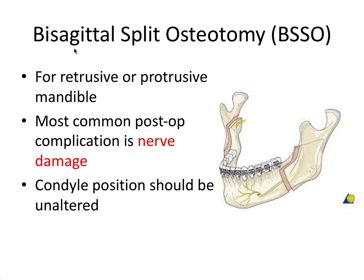A BSSO — bilateral sagittal split osteotomy — is used for retrusive or protrusive mandibles, allowing the surgeon to either set back or bring forward the mandible. Cuts are made on either side of the mandible above the inferior alveolar nerve and down the side of the ramus. The most common post-op complication is nerve damage due to proximity of the inferior alveolar nerve, so neurosensory disturbances like paresthesia or loss of sensitivity are very common. The condyle position should ideally remain unaltered.